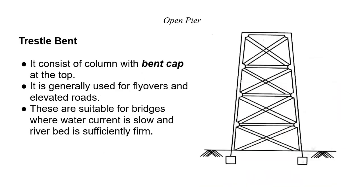Trestle Bend piers are used for flyovers and elevated roads. The trestle bend is used in railway station approaches and passages. Steel horizontal bracing is provided to give lateral stability. The trestle bend construction is applied in river bed and drainage area conditions. Names, sketches, and basic definitions have been covered.